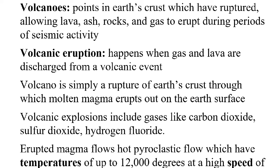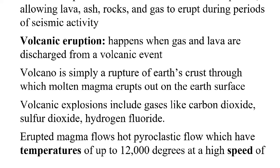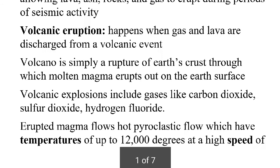A volcano is simply a rupture of Earth's crust through which molten lava and molten magma erupts out onto the Earth's surface. Gases released include carbon dioxide, sulfur dioxide, and hydrogen fluoride — these have an unpleasant, corrosive smell. Air and ash are also produced in different layers of the atmosphere.